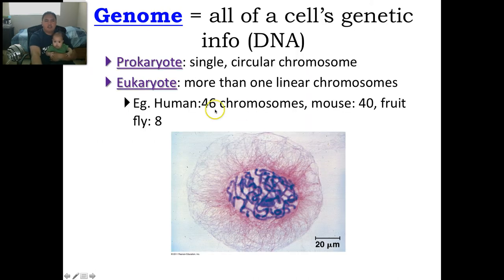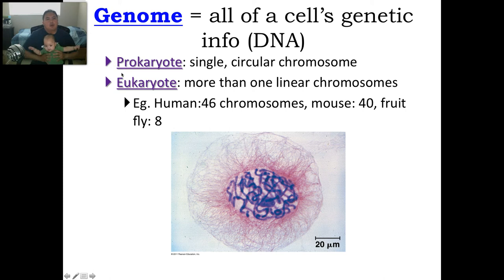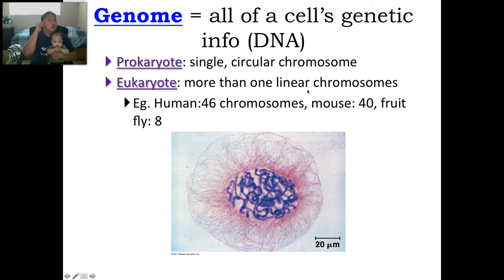Some brief vocabulary: a genome is all the cell's genetic information — your DNA is like your genome. You may have heard of the Human Genome Project, where they try to map all of our genes in our DNA. There are two types of cells: prokaryotes and eukaryotes. A prokaryote has only one single circular chromosome, and a eukaryote has more than one linear chromosome. Eukaryotes are cells with nuclei. Humans have 46 chromosomes or 23 pairs. Mice have 40, and fruit flies only have 8.